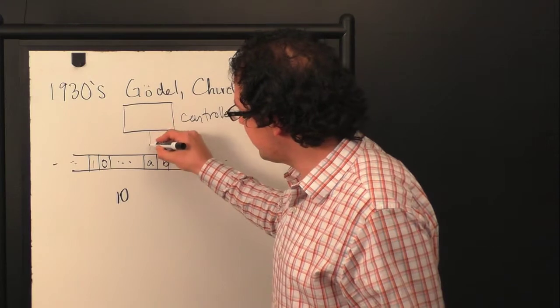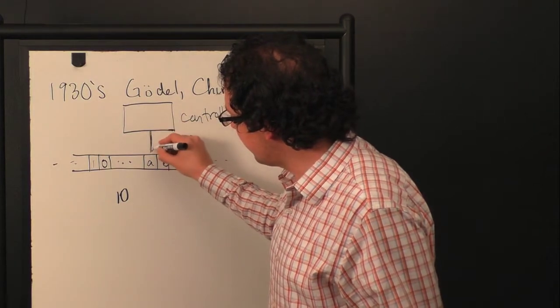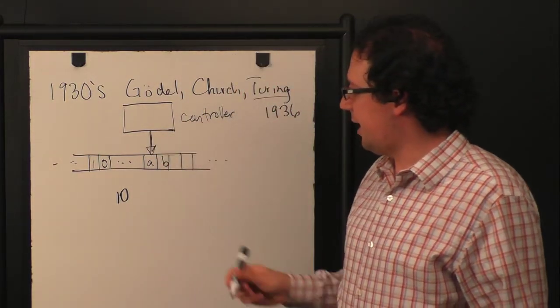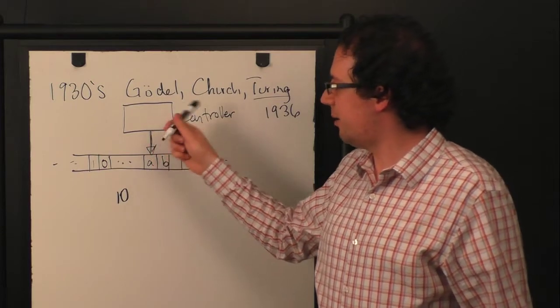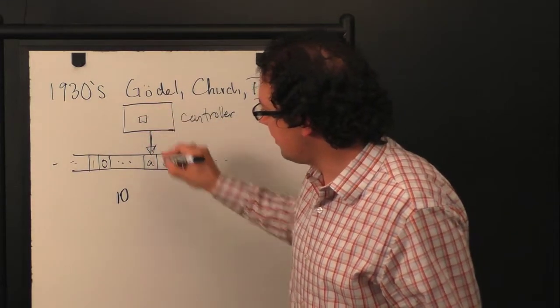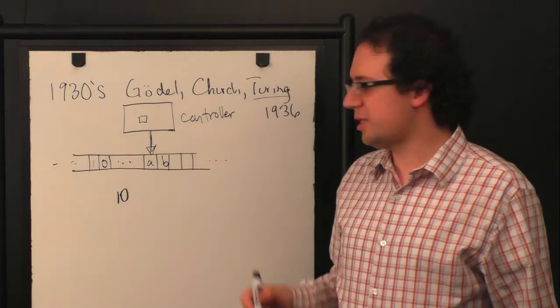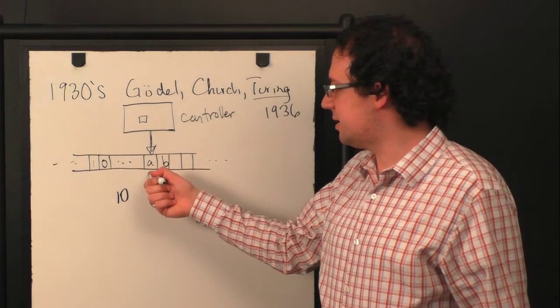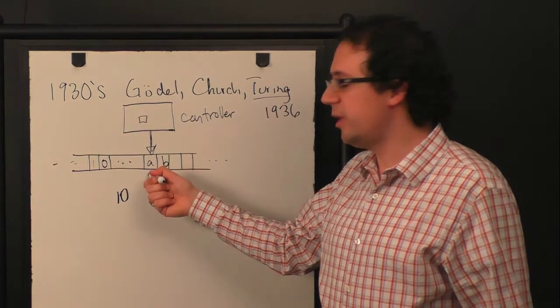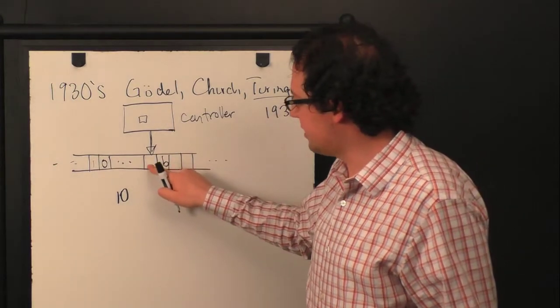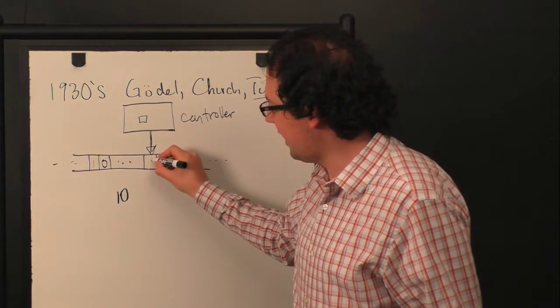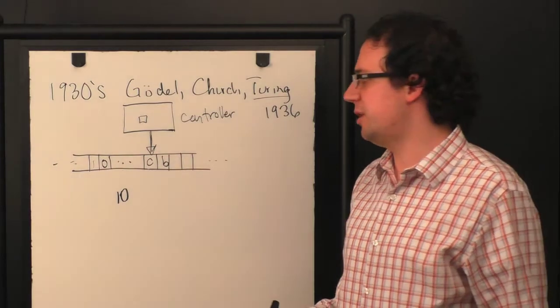Well, it looks at some particular square on the tape, and based on what's in that square and whatever state it's currently in, it decides what to do next. Maybe it rewrites this square. So maybe it says, it's current instruction, it sees an A, it's supposed to turn into a C. That could be part of a computation.